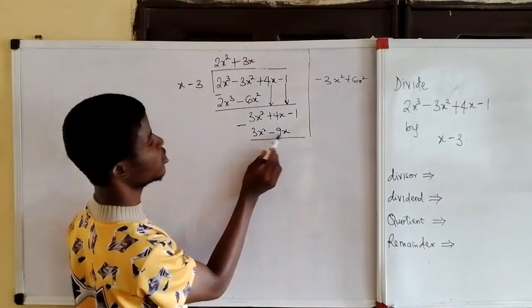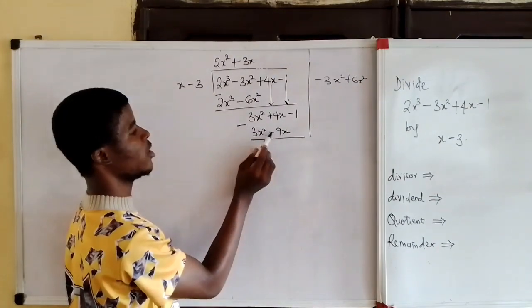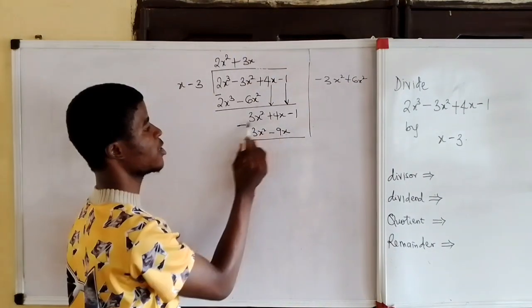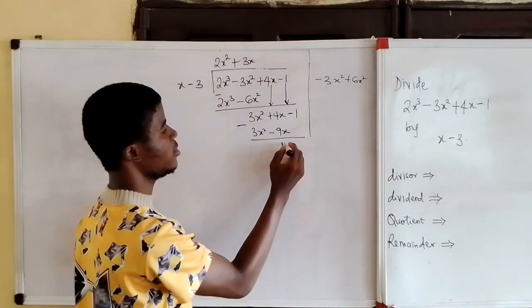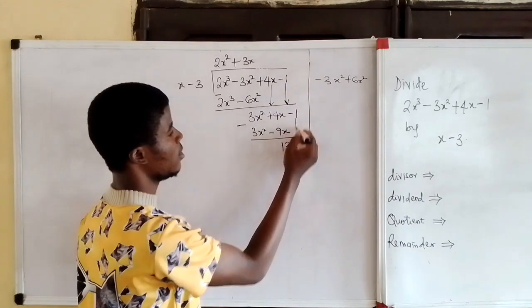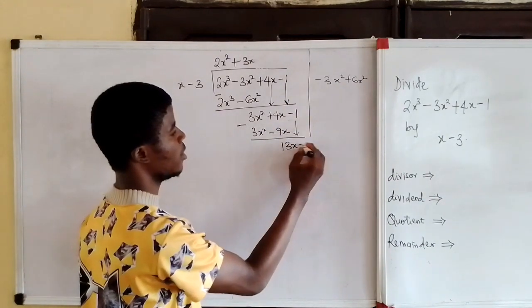4x minus minus 9x. This is already plus 9x. So 4x plus 9x is 13x. Then minus 1 will come down, minus 1.